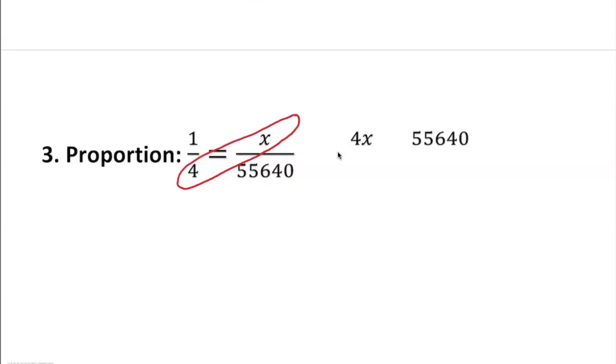Now we're going to divide by 4 on both sides. We're going to divide by 4 on both sides clearly, so this 4 gets cancelled. And x is equal to clearly $13,910. It's the same answer we found earlier.